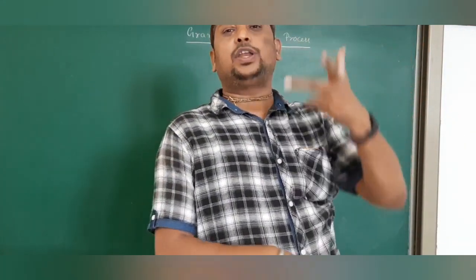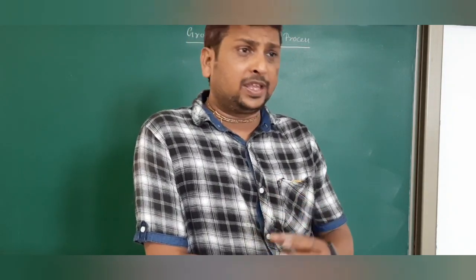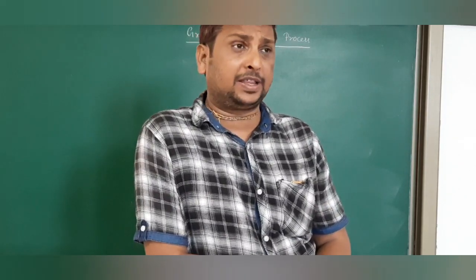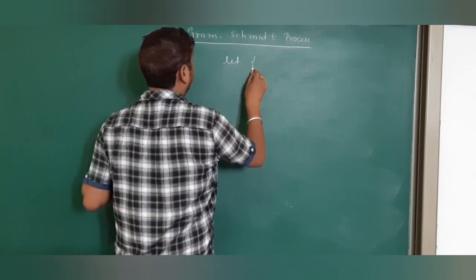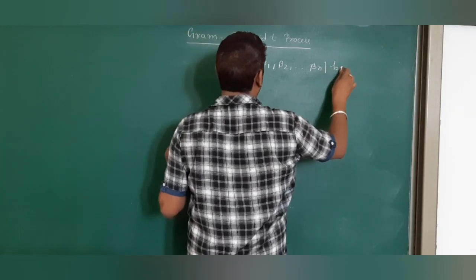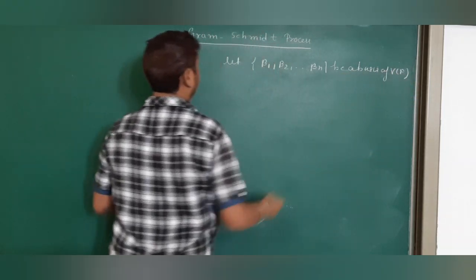Hello friends, today I will explain a very important topic which is called the Gram-Schmidt process of inner product space. It is basically about how we obtain an orthonormal basis from a given basis. They will give one basis and ask you to construct an orthonormal basis. They have given beta 1, beta 2, beta m as a basis of V.